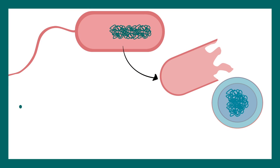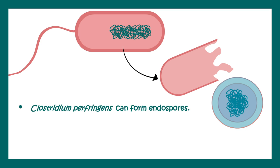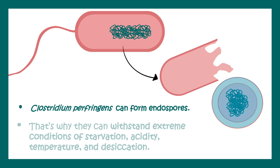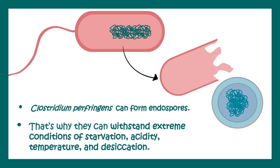What makes Clostridium perfringens very dangerous is the spore-forming ability. It can form endospores which are resistant to extreme conditions of starvation, acidity, temperature, or desiccation. Simply, they can survive in harsh environments.